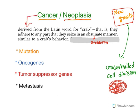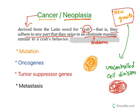Then why is it called cancer? The word cancer is derived from a Latin word for crab. What does a crab do? It adheres to any part, seizes it, and attacks in a stubborn, obstinate manner. Cancer growth is also like this — whenever it forms at a particular organ, the growth is very stubborn and cannot be killed by human immunity or external drugs.